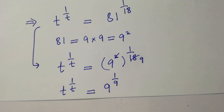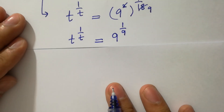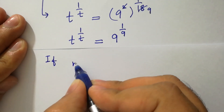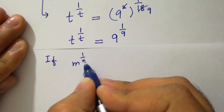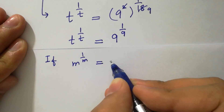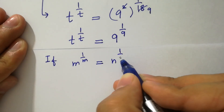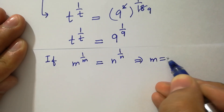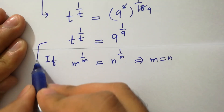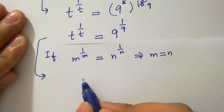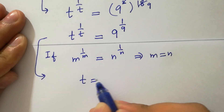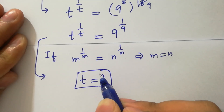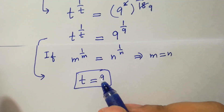By this we note that if m to the power 1 over m equal to n to the power 1 over n, then m equal to n. So we have the value of t equal to 9.